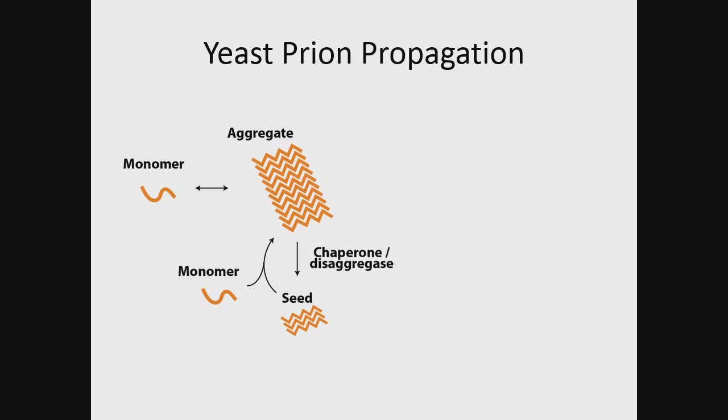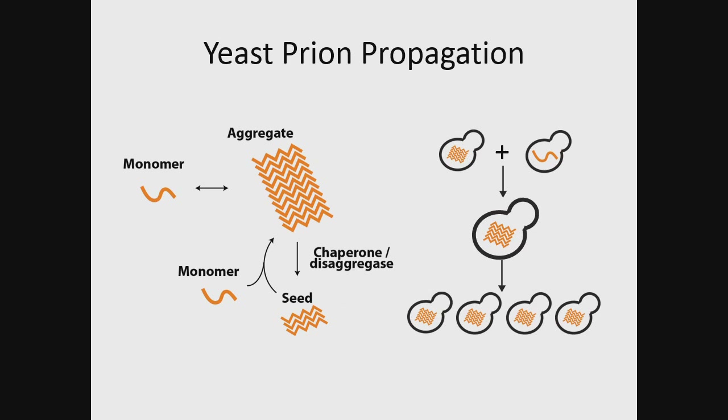These are genetic elements in a sense, but they're not Mendelian. If you have a mating event between two cells — one containing the protein aggregate and one with soluble protein — the aggregate or prion state is always dominant because the soluble protein will be templated into the aggregate. So the diploid cell will have the prion-plus state. Furthermore, when you sporulate and get four spores out, each will also contain those amyloid seeds and will propagate the prion.